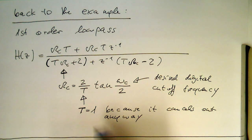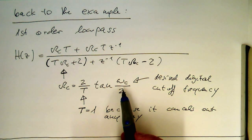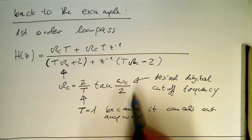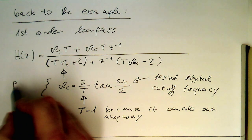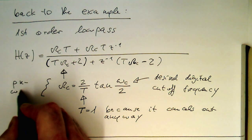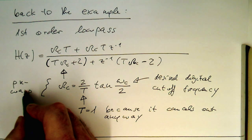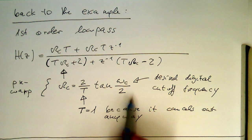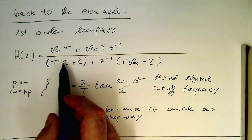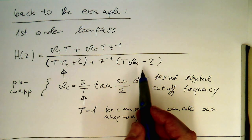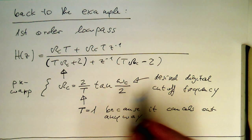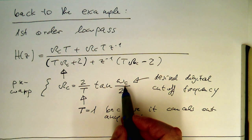With this, the design steps are clear. We need to first pre-warp, as this operation is called. Then we're putting this omega into this formula, and with this we're getting our purely digital filter with our normalized cutoff frequency.